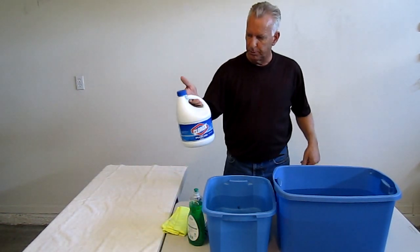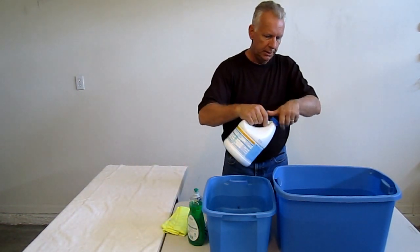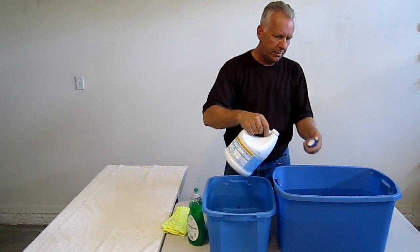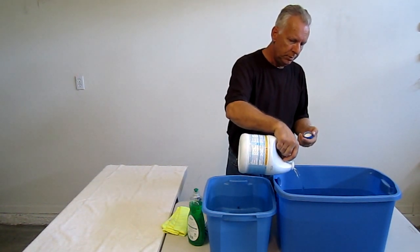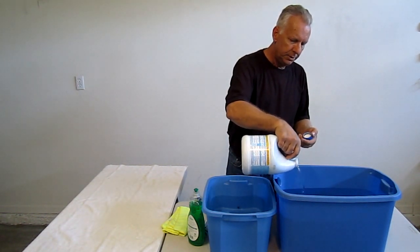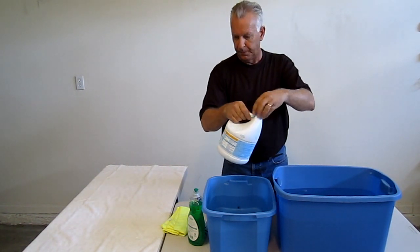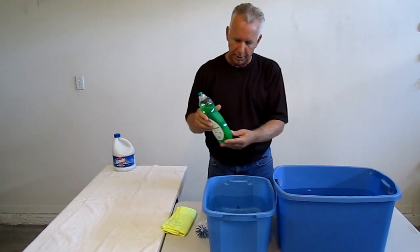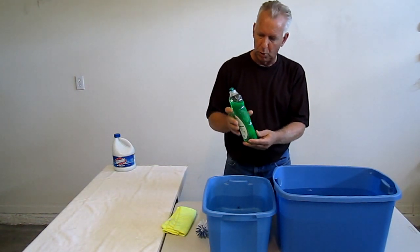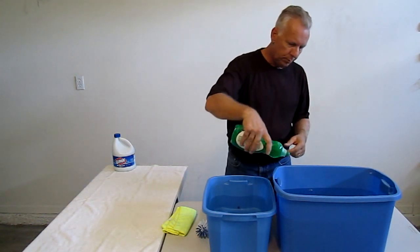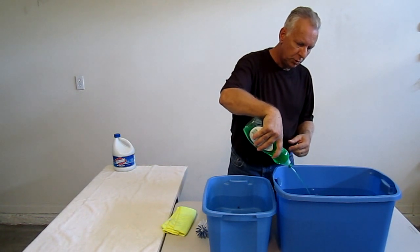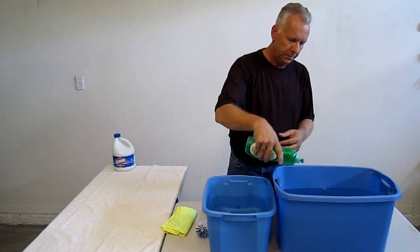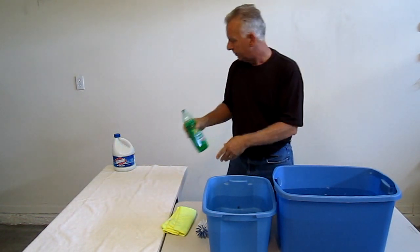And what you want to do is just take regular household bleach, and I have about seven to eight gallons of water. I'm just going to pour a cup and a half, two cups in the water. Set that off to the side. Just take some ordinary household dishwashing detergent, and you want to put maybe two or three good squirts.